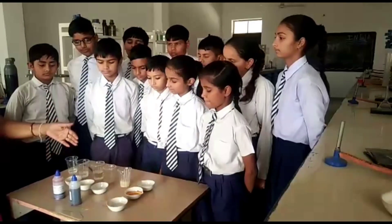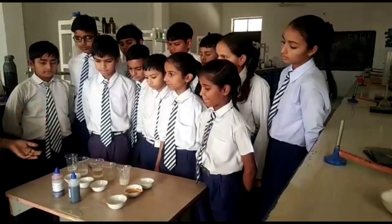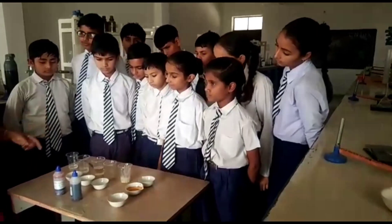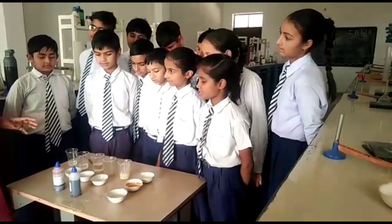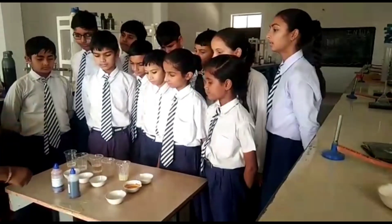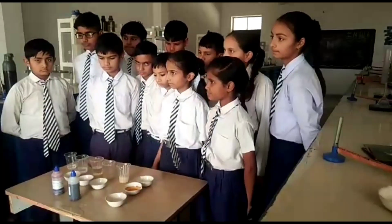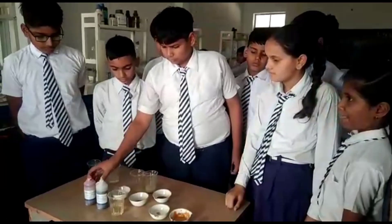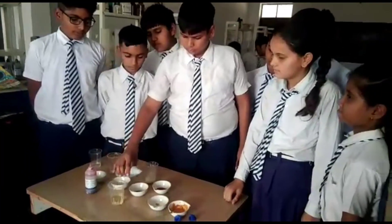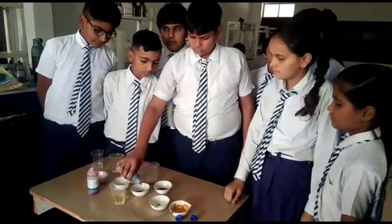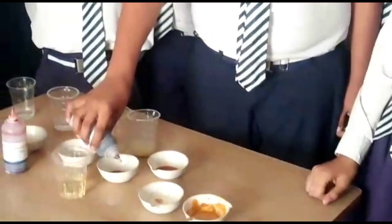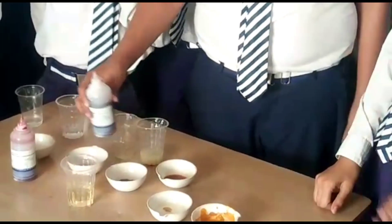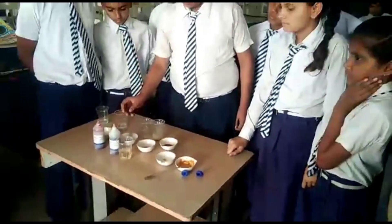Now we will show the different color changes in all these substances, and on the basis of color change, we can find out which is acidic and which is basic. We can set up and analyze the color change.